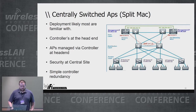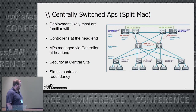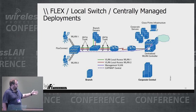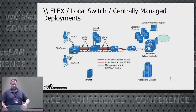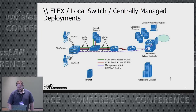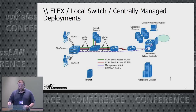Centrally switched APs are the split MAC design — all of us are really familiar with this. Controllers at the head end, AP managed by the controller, security at the central site, simple redundancy techniques. Then there's FlexConnect, where you have a lot of different options: centrally managed, centrally switched, or locally switched — on a per-WLAN basis. How many of you have done FlexConnect-style deployments? FlexConnect troubleshooting? Every AP has to be aware of the VLANs and WLANs it's terminating, so there's a whole lot more to it than just placing APs and getting the RF right.